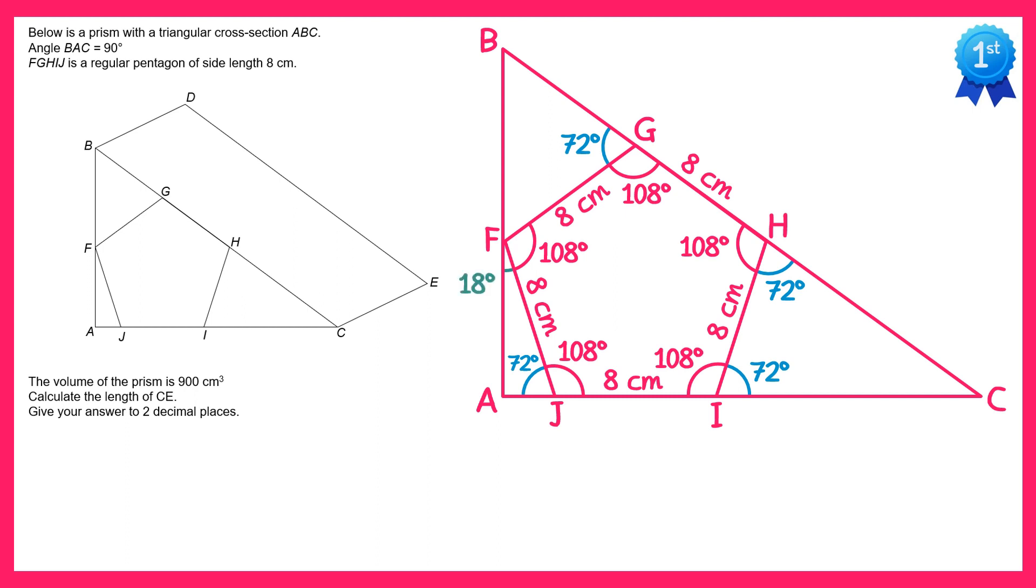We can then find the angle BFG, which is this angle here. All three of those angles there go together to make a straight line, so if you take 18 and 108 from 180 you're left with 54 degrees. If you now look at the triangle BFG we've got two of the angles so we can find the remaining one up here. Take 54 and 72 away from 180 and you're left with 54 degrees.